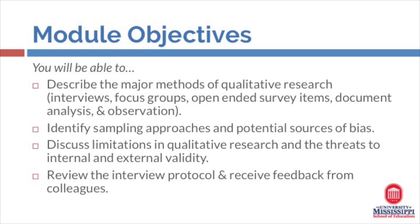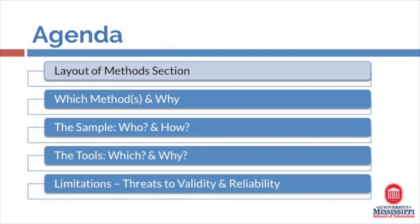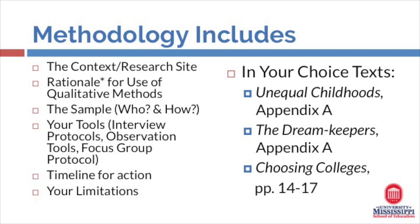Here's our agenda for this particular module. First we'll review the layout of the method section. We'll discuss which method to choose and why. We'll look at sampling approaches, specifically the who and how of our sample. We'll look at the tools that align to that — the which and the why. We'll discuss limitations and threats to validity and reliability. Our methodology section will include the context and some information about the research site.